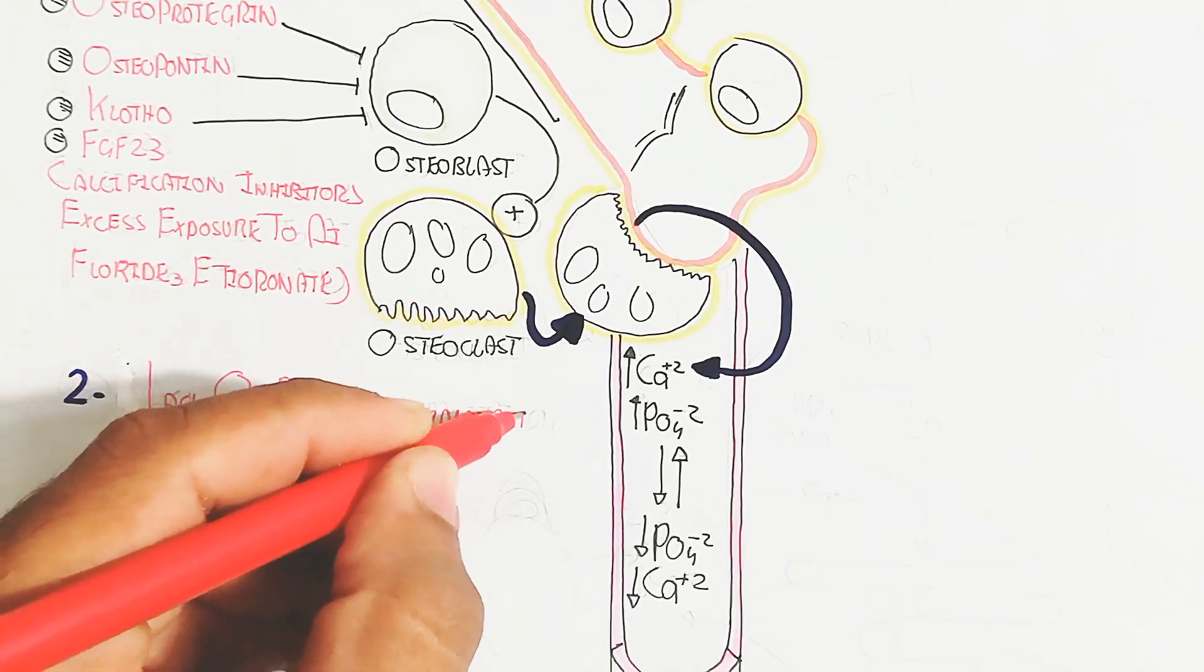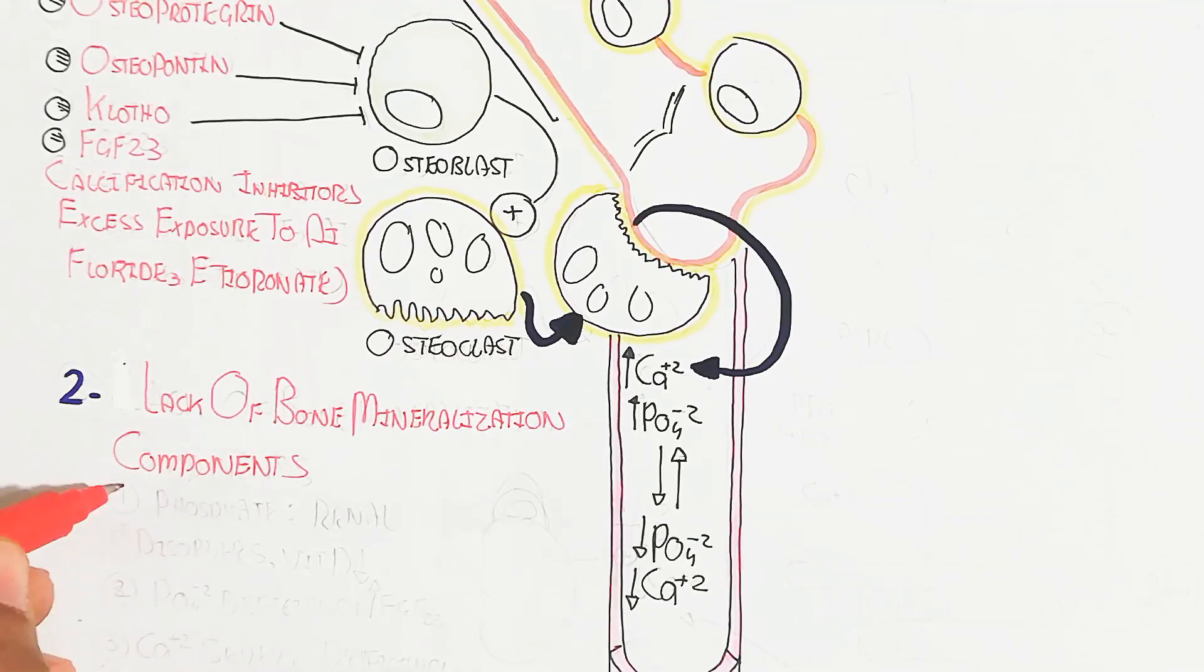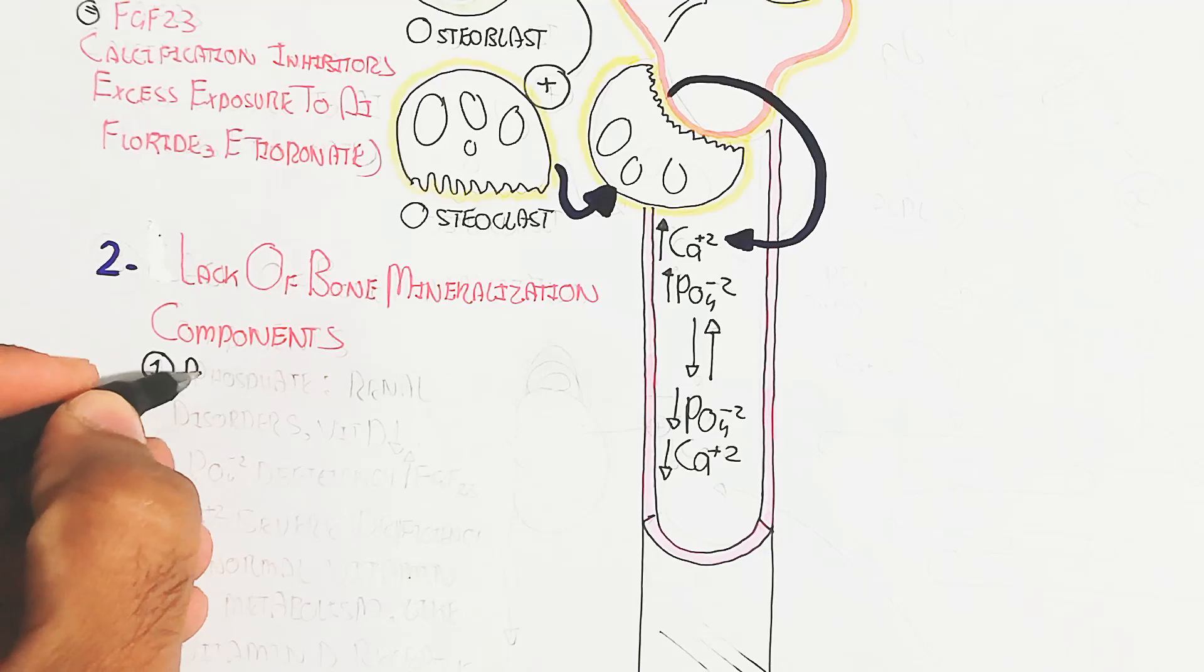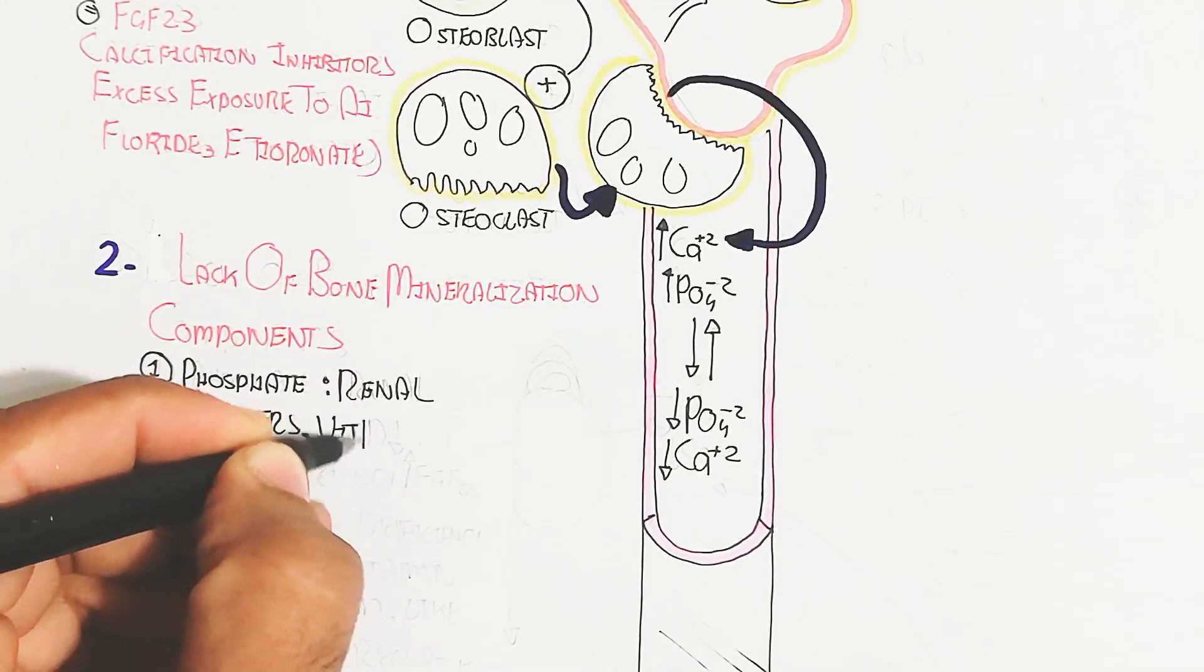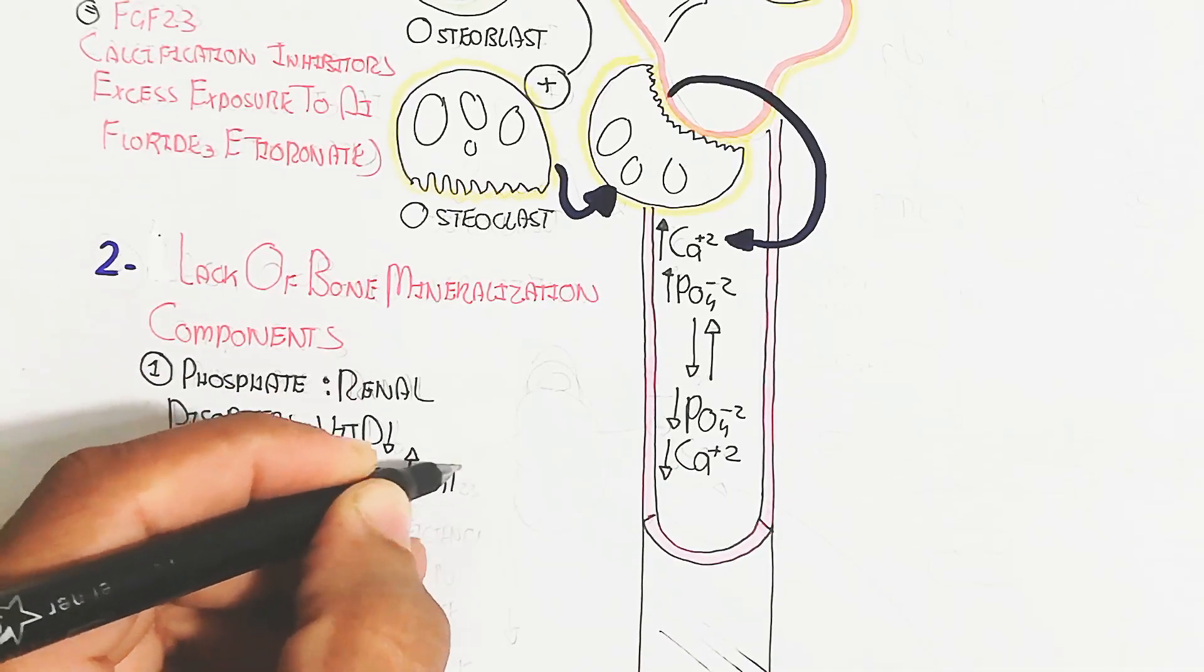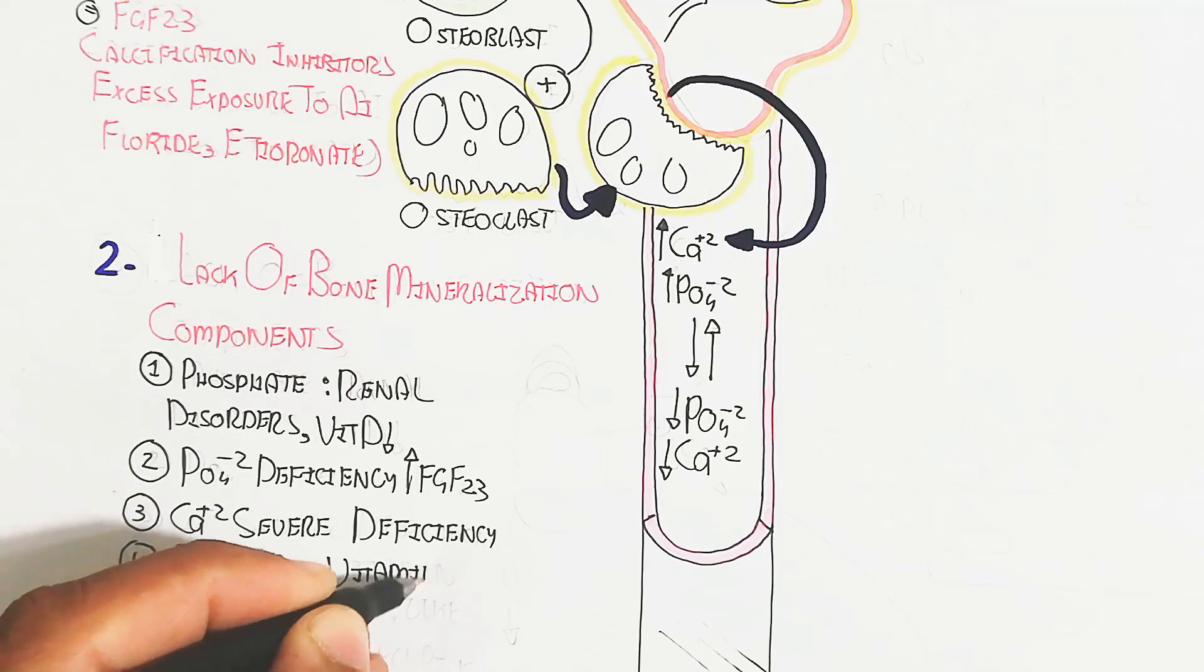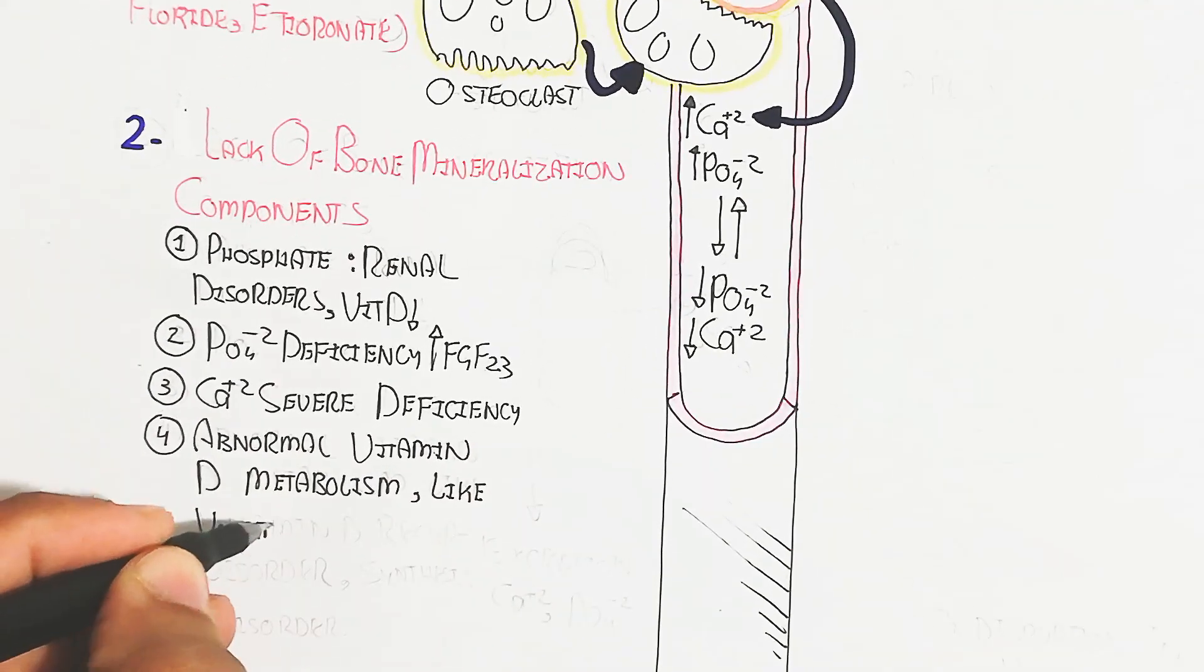On the other hand, lack of bone mineralization components. When the concentration of calcium and phosphate will increase from the bone into the blood circulatory system, but it will be decreased ultimately. The phosphate is a renal disorder, and vitamin D deficiency will lead to excretion of phosphate. The phosphate deficiency will lead to increase in FGF23 due to the phosphate deficiency.